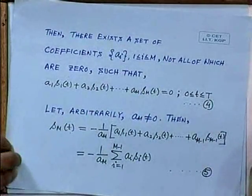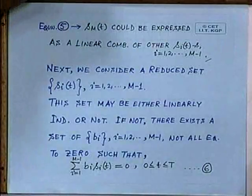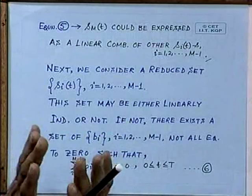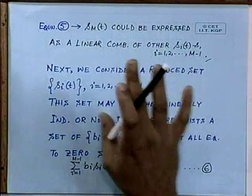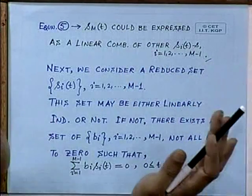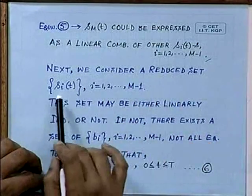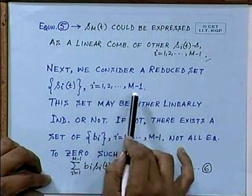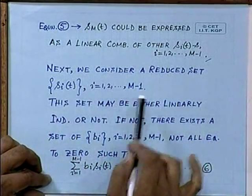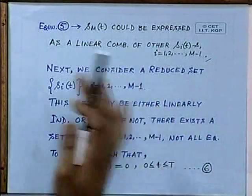This is a dependent signal. So what we do is that we eliminate SMT and consider a smaller subset. I am saying a reduced set of SIT, i varying from 1 to m minus 1, not up to m, because SMT we now know is dependent on other basis functions, other signals.